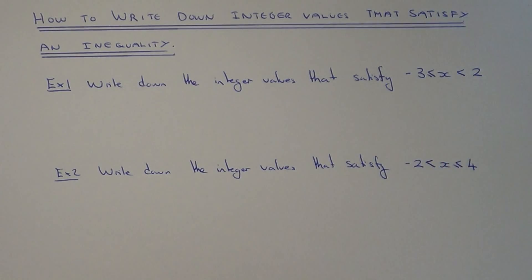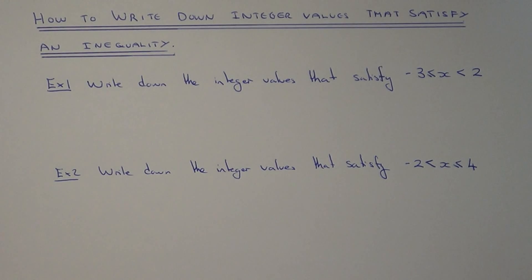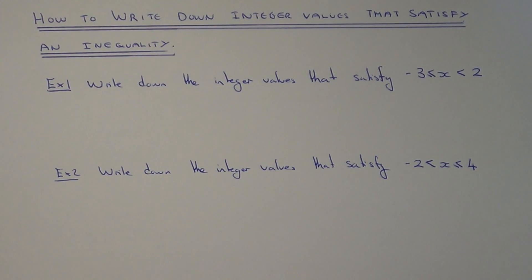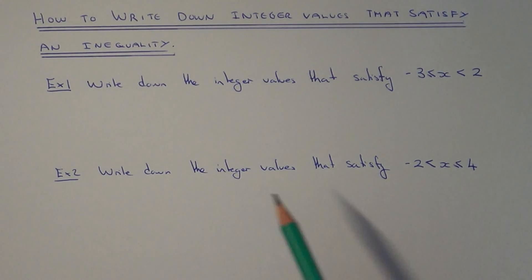Today I'm going to show you how to write down the integer values which satisfy an inequality. You need to understand what an integer value is — an integer is basically a whole number. So we're looking for the whole numbers which satisfy the inequality.